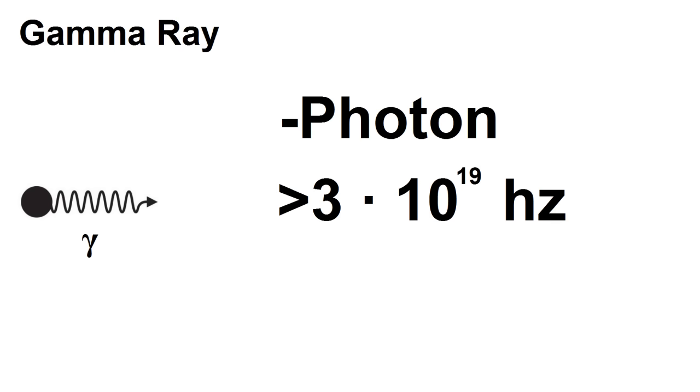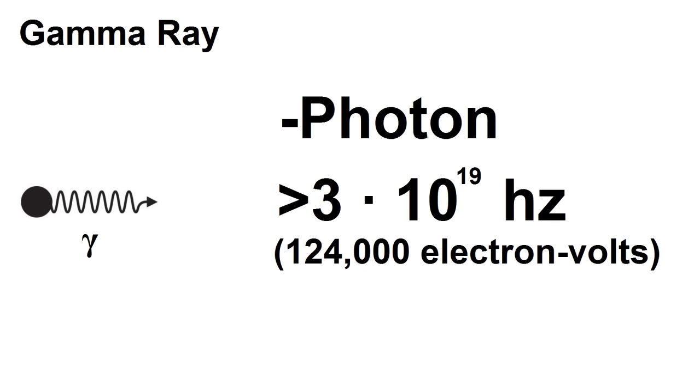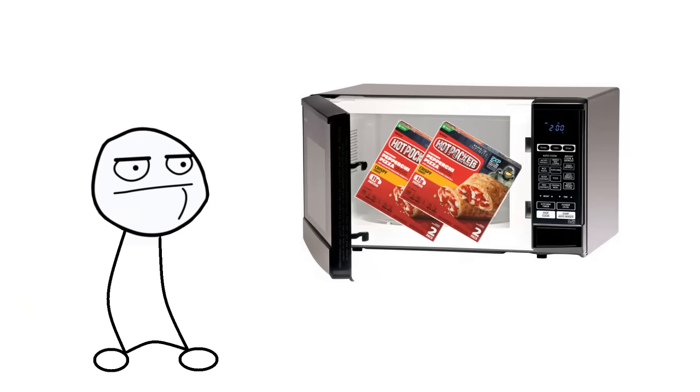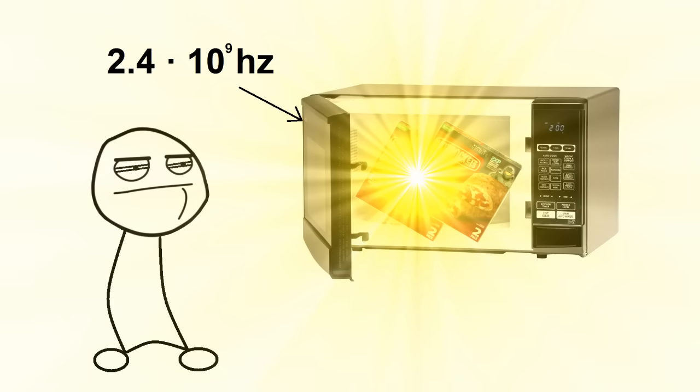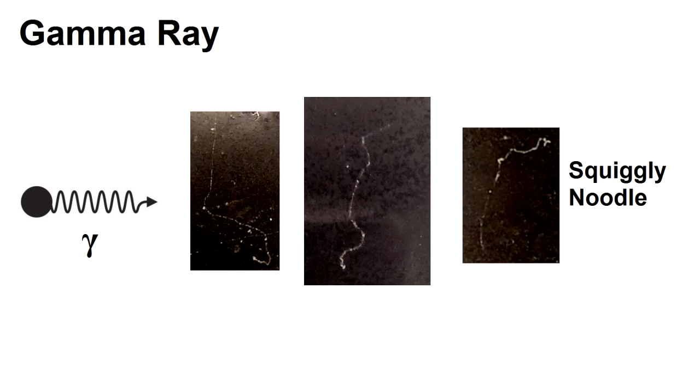Finally, there's gamma particles, which are actually just gamma rays, photons with ridiculously high energy. These have a frequency greater than 10 to the 19 hertz, which is around 10 billion times higher frequency than the microwave radiation you heat up your pot pockets with. These show up as thin squiggly lines in the cloud chamber.